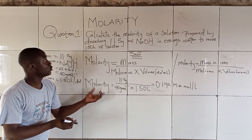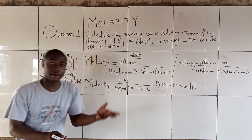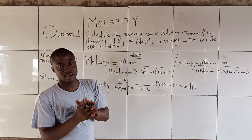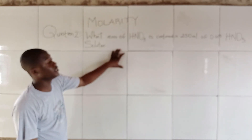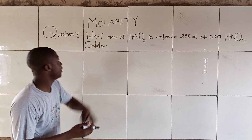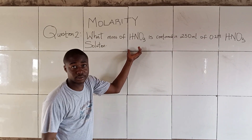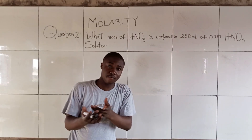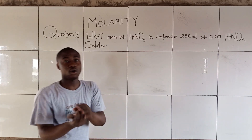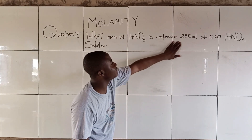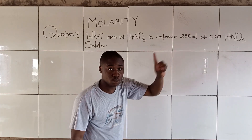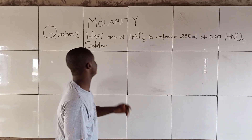That is how to solve questions on Molarity. Now, question 2 says: what mass of HNO₃ — nitric acid — is contained in 250 milliliters of a 0.2 molar HNO₃ solution? You can see the volume here is not in liters but in milliliters.